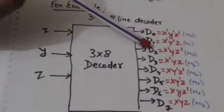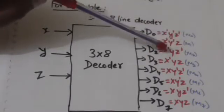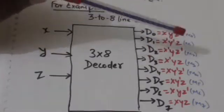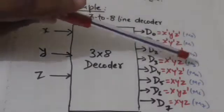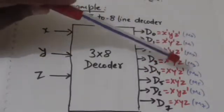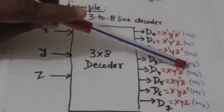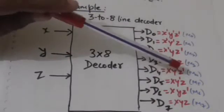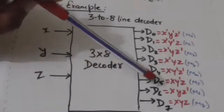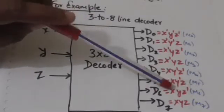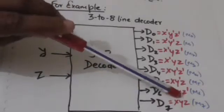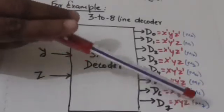D0 represents the minterm x'y'z'. D1 represents the minterm x'y'z. D2 represents the minterm x'yz'. D3 represents the minterm x'yz. D4 represents the minterm xy'z'. D5 represents the minterm xy'z. D6 represents the minterm xyz'. D7 represents the minterm xyz.